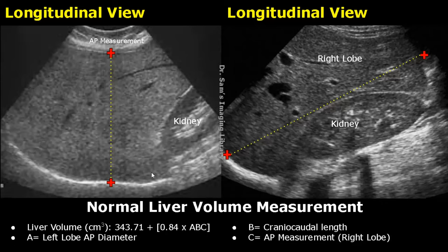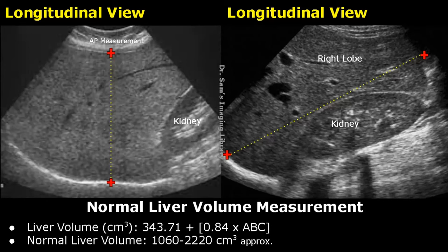After three values are obtained, liver volume can be measured. The formula for measuring liver volume is 343.71 plus the product of 0.84 times A into B into C, where A is the AP diameter of the left lobe, B is the craniocaudal length of the liver, and C is the AP measurement of the right lobe. The normal range for liver volume is between 1060 and 2220 cubic centimeters.